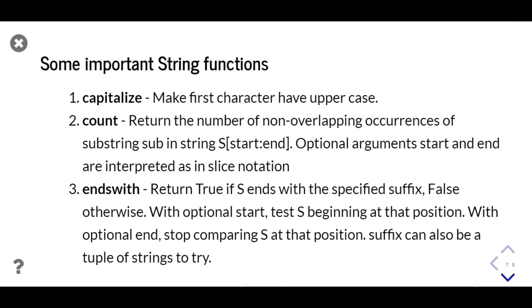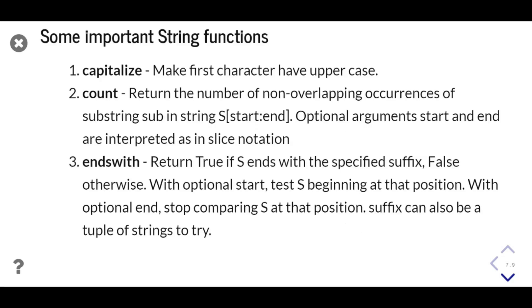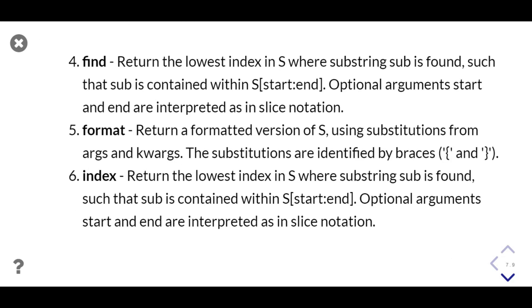These are some important string methods in Python. The capitalize method makes the first character uppercase. The count method takes a character as a parameter and counts the number of occurrences of that character in the string; it can take optional start and end parameters. endswith is used to check for the presence of a specified suffix in the string. The find method finds the index of any substring and can also take optional start and end parameters. The format method returns a formatted string.